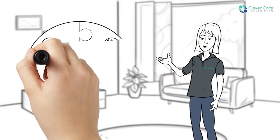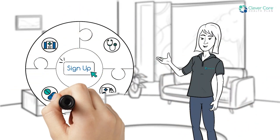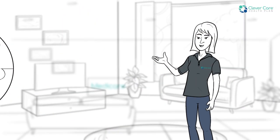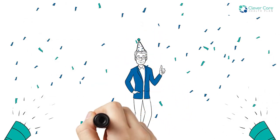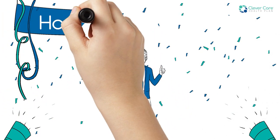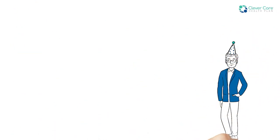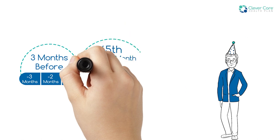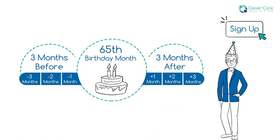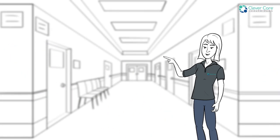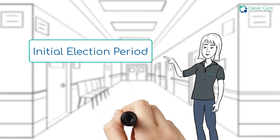Medicare plans are not something you can sign up for every day. So, when can you sign up or change plans? Let's start with an important milestone, your 65th birthday. You have a 7-month window from 3 months before to 3 months after your birthday month to sign up for Medicare. This is your initial election period.